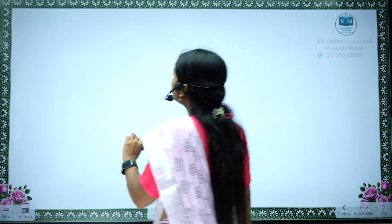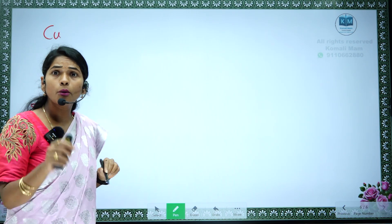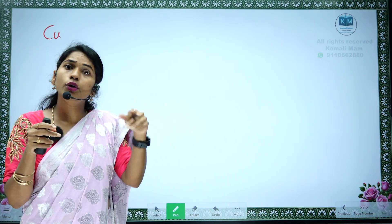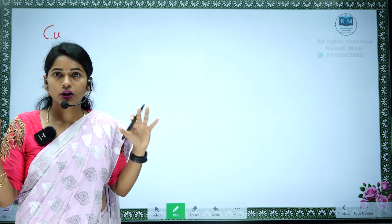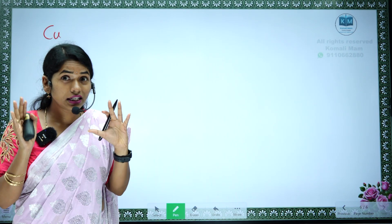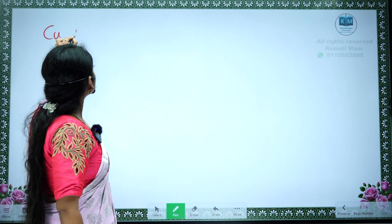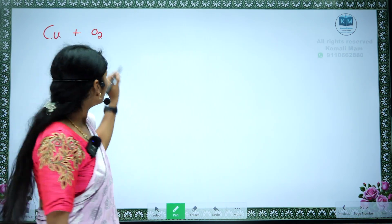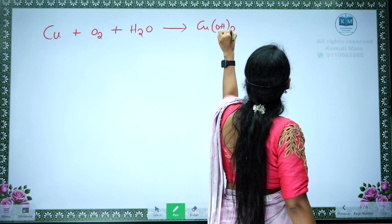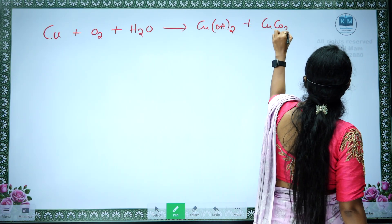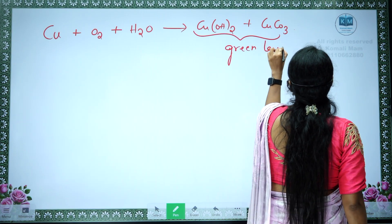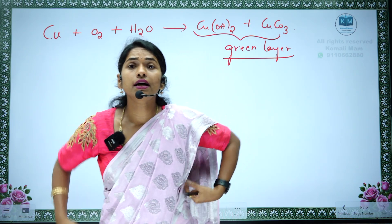Not only iron — copper also undergoes corrosion. If you keep a copper pot for a few days, a green color layer appears. This is because copper reacts with oxygen present in the air and moisture, and converts into copper hydroxide and copper carbonate. This combination of copper hydroxide and copper carbonate is the green layer we observe.